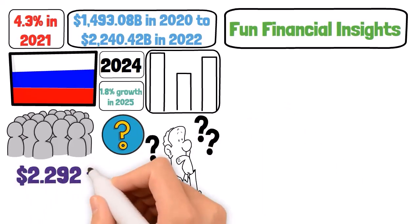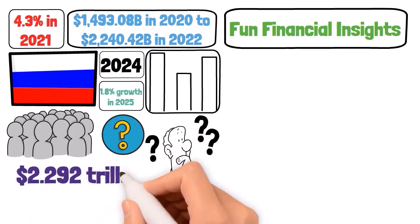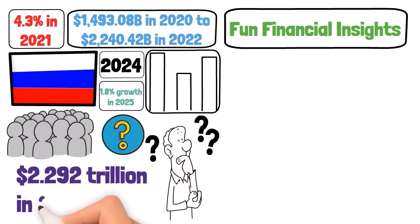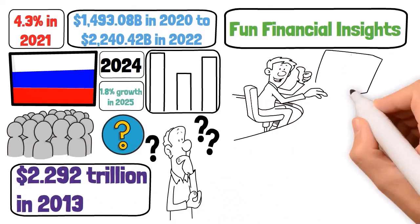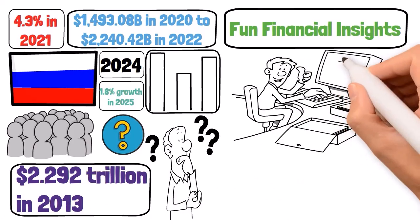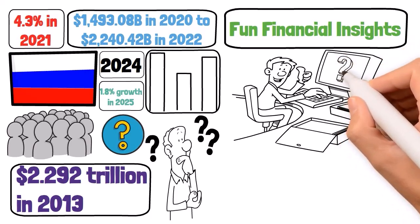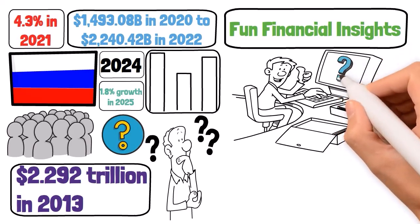Since the fall of the Soviet Union, Russia's GDP has seen a rollercoaster ride, peaking at 2.292 trillion in 2013 before sanctions bit into its growth. Fast forward to today, and the question on everyone's mind is: can Russia innovate its way out of economic isolation, or will it return to the shadows of its Soviet past?